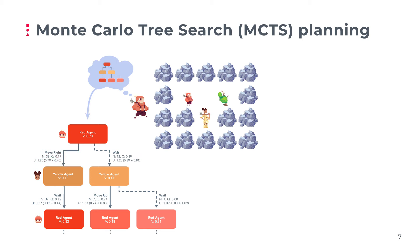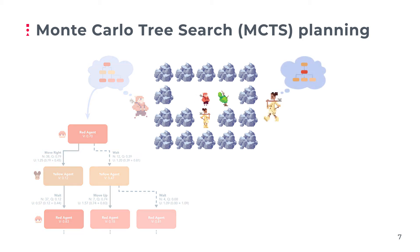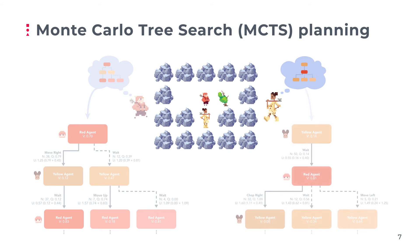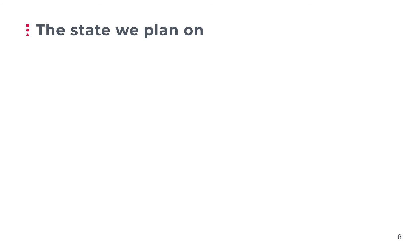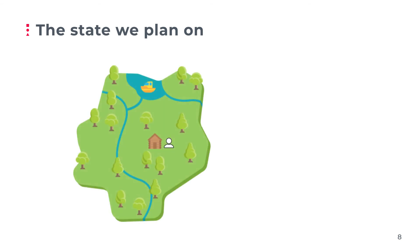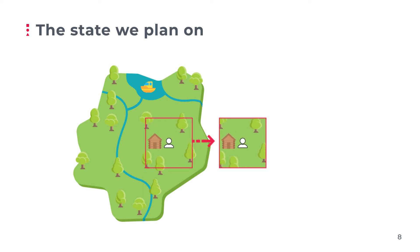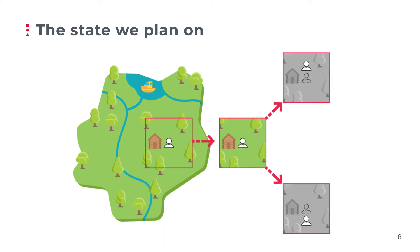Now it's yellow's turn. Yellow has no other option than waiting, but it still creates a plan and considers the red agent's next move. If red moves back left, yellow can expect a value of 0.64 in the next turn. However, if red chops the tree, there are no more trees left for yellow, and the node's value is 0. Each node in the plan has a corresponding state. Copying the entire world state between each node would be terribly inefficient. We've therefore chosen to plan on a subset of the world, which we call a snapshot. In order to avoid copying snapshots between nodes, we only store discrepancies between the node state and the root snapshot.